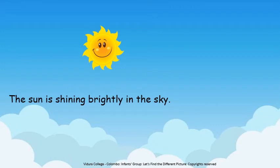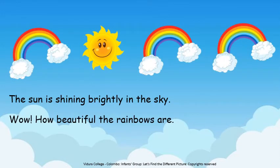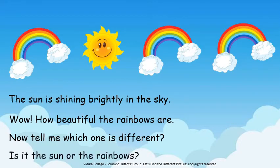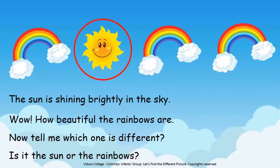The sun is shining brightly in the sky. Can you all see? Wow! How beautiful the rainbows are! Now, tell me which one is different — is it the sun or the rainbows? Children, the three rainbows are similar. But the sun is different. So, I am going to circle the sun.